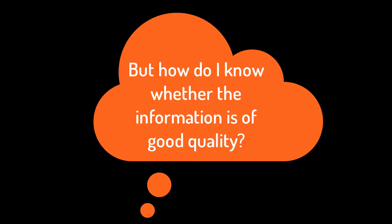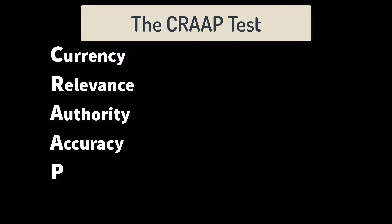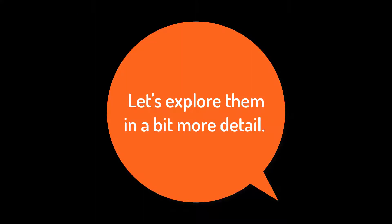You may be asking yourself, how do I know whether the information I've found is of good quality or not? Well, you can use the CRAAP test. The CRAAP test is an acronym where each letter stands for a criteria you can use to evaluate sources of information. The C stands for currency, the R for relevance, the first A for authority, the second A for accuracy, and the P for purpose. So let's explore each of these in a bit more detail.